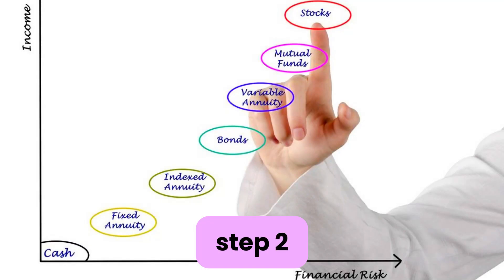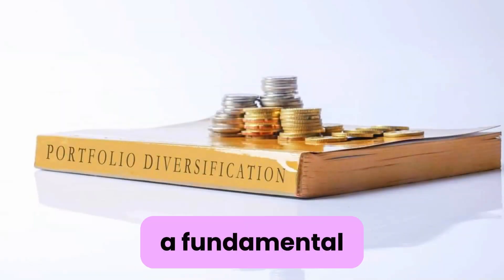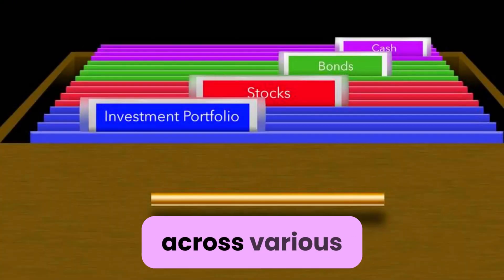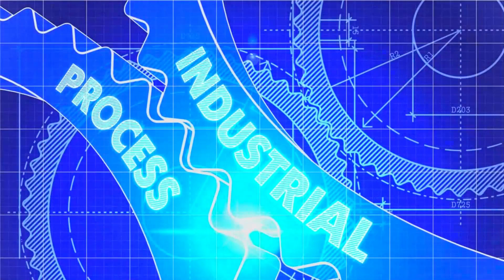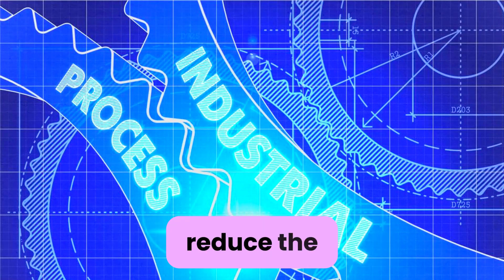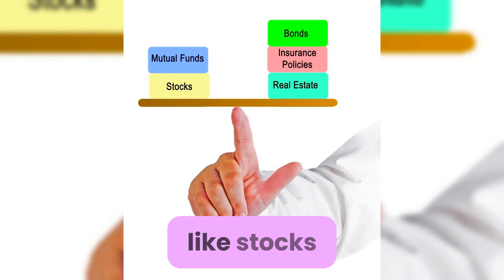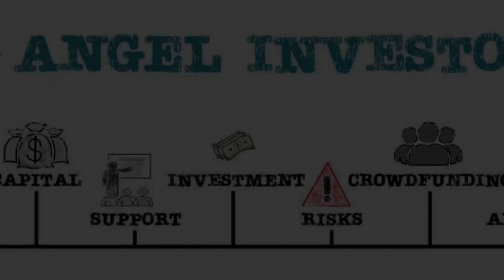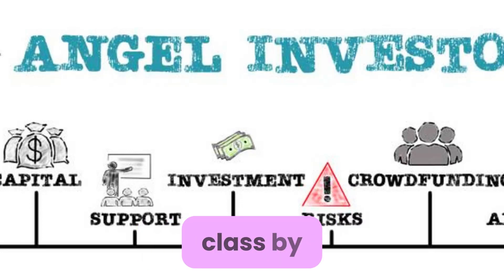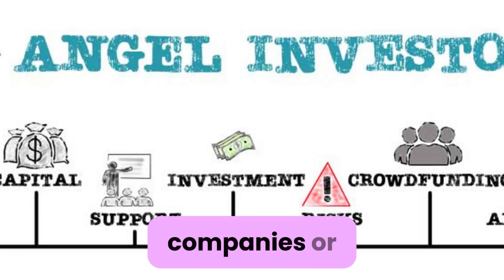Step 2: Diversify Your Portfolio. Diversification is a fundamental risk management technique. By spreading your investments across various asset classes, industries, and geographic regions, you can reduce the impact of potential losses. Invest in different types of assets like stocks, bonds, real estate, and commodities. Additionally, diversify within each asset class by selecting different companies or funds.